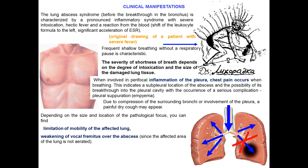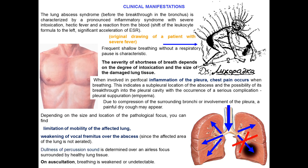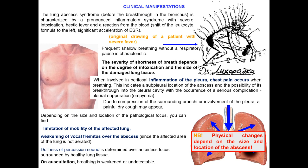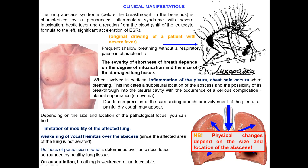Due to compression of surrounding bronchi or involvement of the pleural cavity, a painful dry cough may appear. Depending on the size and location of the pathological focus, you can find limitation of mobility of the affected lung, weakening of vocal fremitus over the abscess — since the affected area of lung is not aerated — and dullness of percussion sound over the focus surrounded by healthy lung tissue.